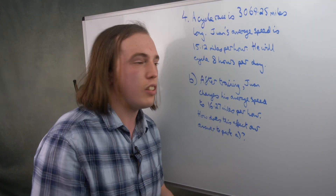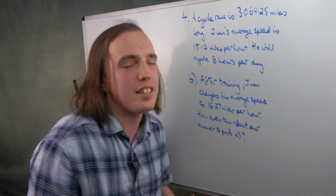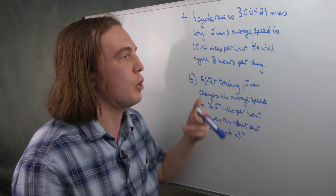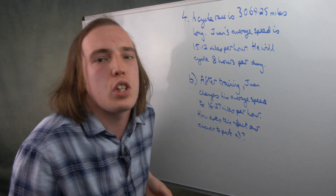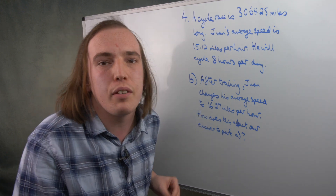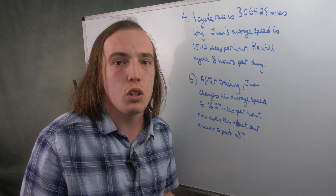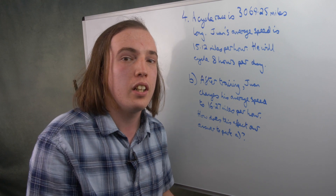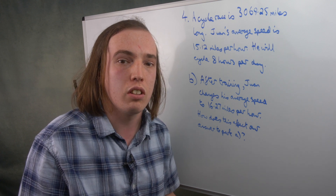In the second part, Huan changes his average speed to 16.27 miles per hour after training. How does this change our answer? There are two ways of thinking about this. On one hand, this is a faster speed, so he'll finish in a shorter time — fewer days. But on the other hand, because this is still an estimation question, you would still estimate 15 rather than 16.27. So you'd actually be perfectly justified to answer either that it would change it — a shorter time — or that it wouldn't, because you'd be rounding to the same figures, as long as your justification is clear.